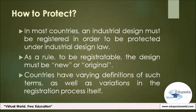So, if someone wants to protect their industrial design, how could they do it? In most countries, an industrial design must be registered in order to be protected under industrial design law. As a rule, to be registrable, the design must be new or original. Generally, 'new' means that no identical or very similar design is known to have previously existed. Once a design is registered, a registration certificate is issued, and the term of protection granted is generally 5 years.